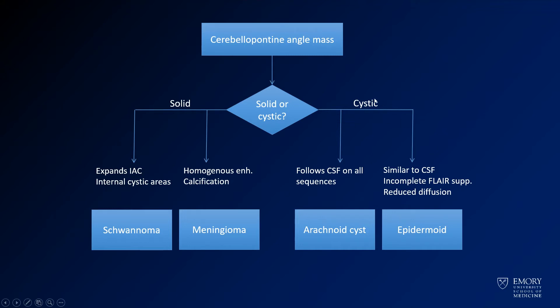For cystic lesions, if it's totally following CSF on all sequences, you're dealing with an arachnoid cyst. If it's similar to CSF but has incomplete FLAIR suppression and reduced diffusion, you're dealing with an epidermoid.